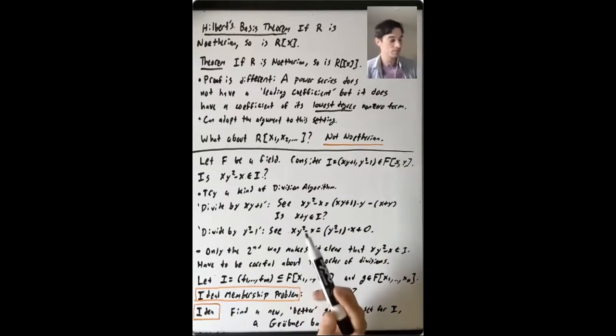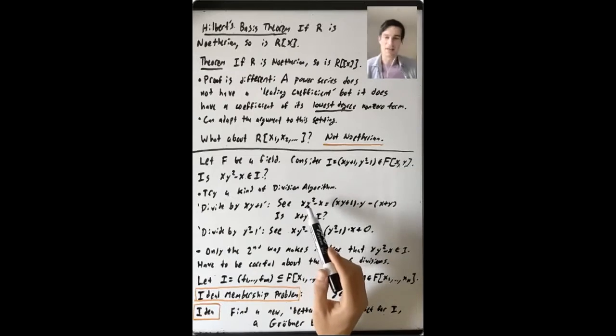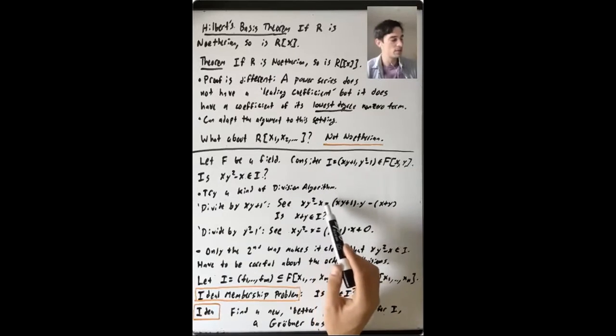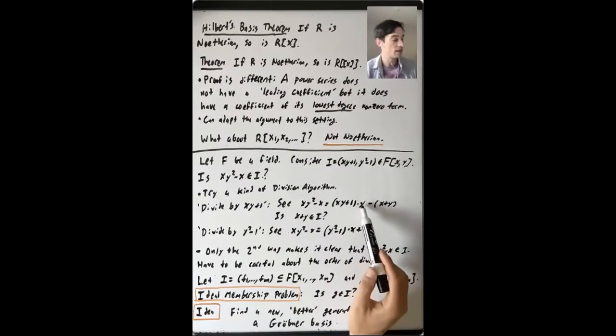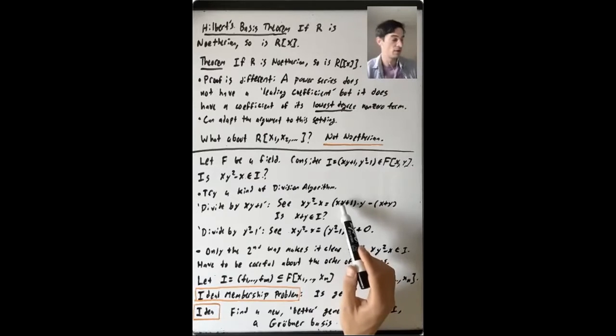X, Y squared minus X. So, okay, you think about it, and you can see that X, Y squared minus X equals X, Y plus one times Y. So now this product is X, Y squared plus Y.